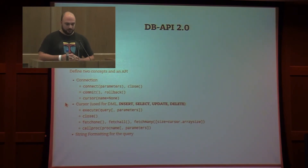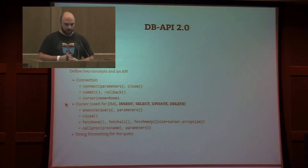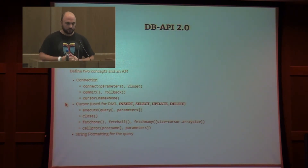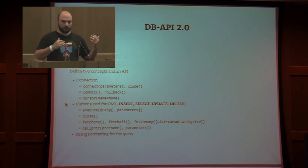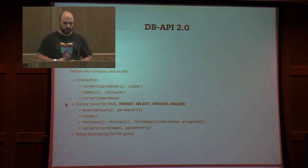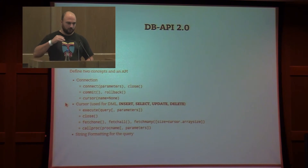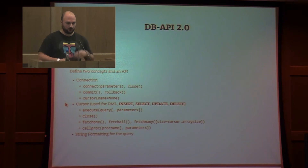For the connection, the DBAPI document proposes the connect function, the commit, the rollback, the cursor, and of course the close. The connect will create a new connection, the close will close it. The commit and rollback manage the transaction status. The cursor will create a new cursor — on the client side if you don't specify the name, and on the server side if you specify the name, which is useful for very large data volumes.